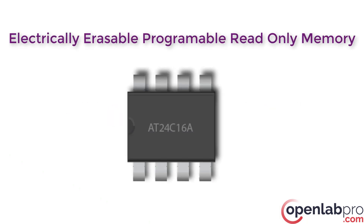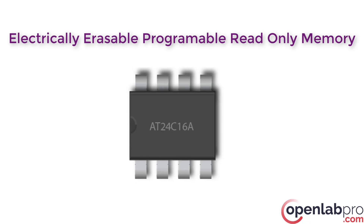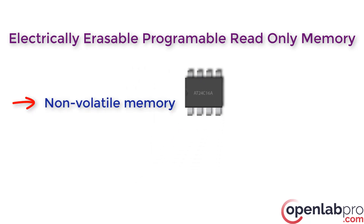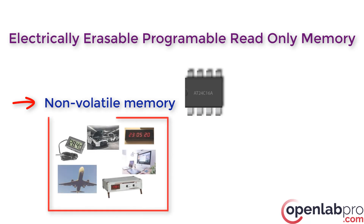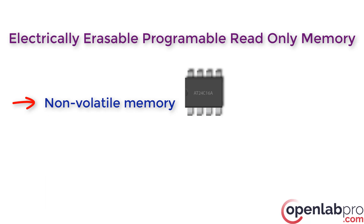We know that EEPROM is electrically erasable programmable read-only memory. It is a non-volatile memory chip. That means it is a user-modifiable read-only memory that can be erased and reprogrammed repeatedly, which is used for storing a small amount of data in computers or some other electronic devices. Through EEPROM, an individual byte of data can be erased and reprogrammed by electrical voltage.